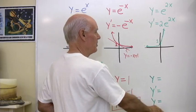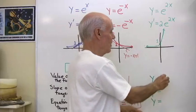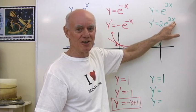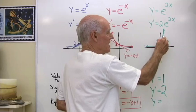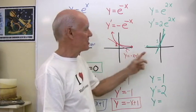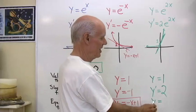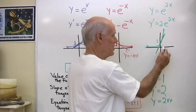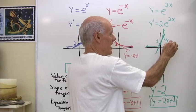For y equals e to the 2x, when x equals 0, 2 times 0 is 0, so e to the 0 is 1. Putting 0 into the derivative 2e to the 2x: e to the 0 is 1 times 2 is 2. So the slope is 2, which makes sense because that graph is going up quicker. The slope of the tangent line here is 2, compared to 1 for y equals e to the x. The equation of the tangent line is y equals 2x plus 1.